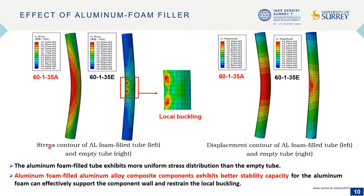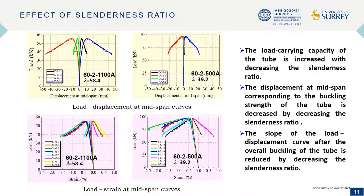The stress contour and displacement contour are plotted. The aluminum foam-filled tube exhibits more uniform stress distribution than the empty tube. Aluminum foam-filled aluminum alloy composite components exhibit better stability capacity, as the aluminum foam can effectively support the component wall and restrain local buckling.